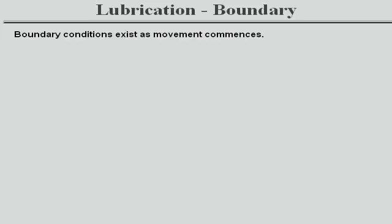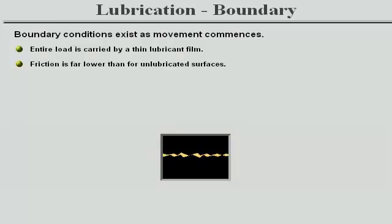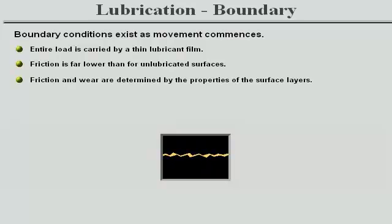The boundary conditions exist as movement commences from rest and friction between mating surfaces is high due to frequent metallic contact. The entire load is carried by a lubricant film considerably thinner than the surface roughness. The friction is far lower than for unlubricated surfaces. Friction and wear are determined by the properties of the surface layers — that is, physically absorbed oil additives, chemically bound surface films, etc. The viscosity of the lubricant is of minor significance at boundary conditions.